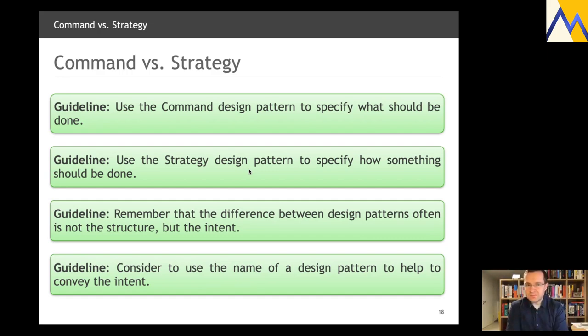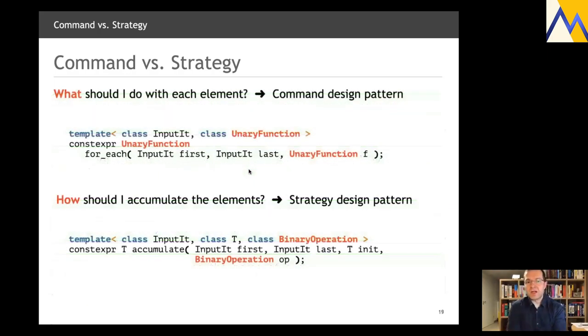Imagine that this actually might make a small difference in the STL too. Instead of having some unary function for forEach and a binary operation for accumulate, why not just name it like that? A unary command and a binary strategy. That might actually help to truly tell people what you're after, what you want to do. Perhaps a little less subtle than just kind of arbitrary names.